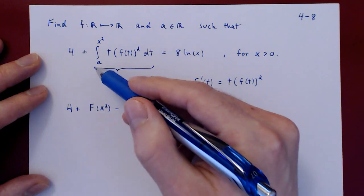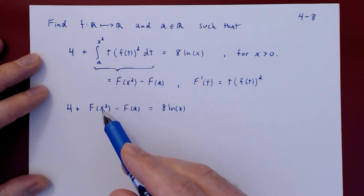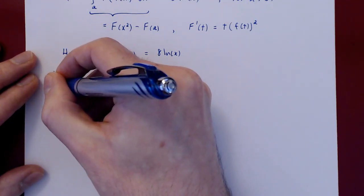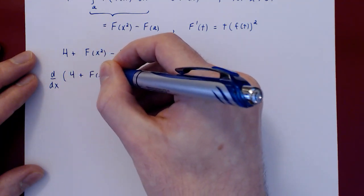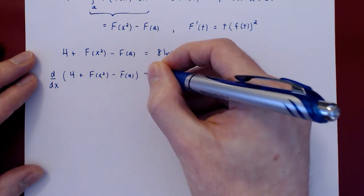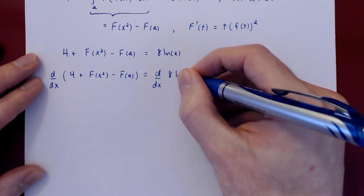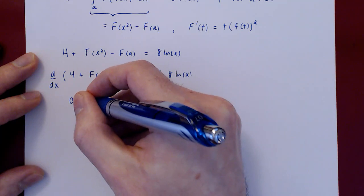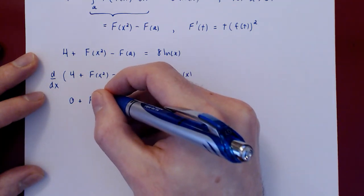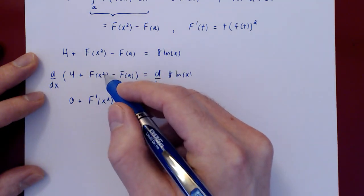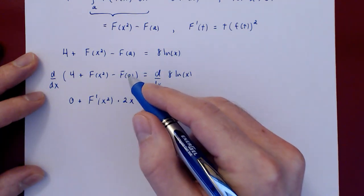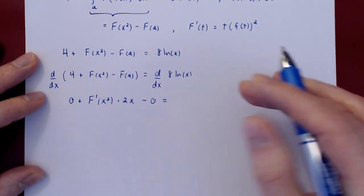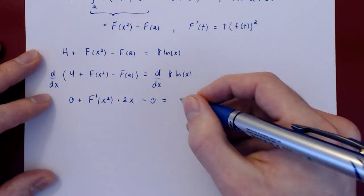To eliminate the integral, we simply take the derivative of both sides with respect to x, as both sides are functions of x. The derivative of the left with respect to x will equal the derivative of the right with respect to x. The derivative of 4 is 0. Plus the derivative of F of x squared — we apply the chain rule — so the derivative of F prime, times the derivative of the argument, 2x. Minus the derivative of F of a: since a is a constant, F of a is a constant, so the derivative with respect to x is 0. This equals the derivative of 8 ln of x, which is simply 8 over x.